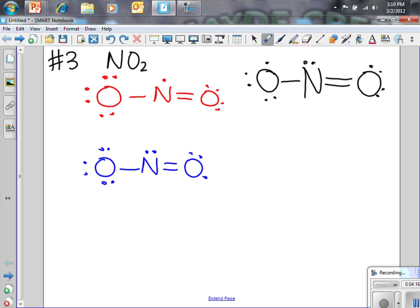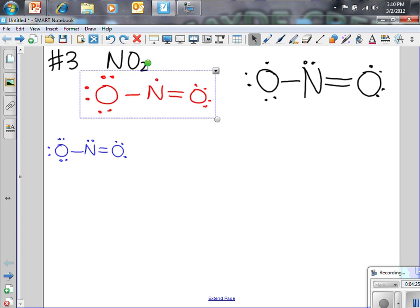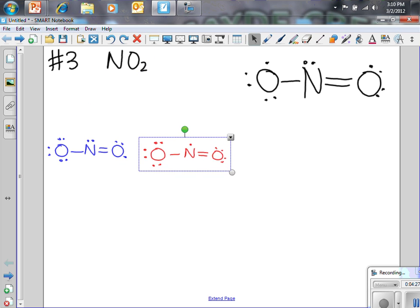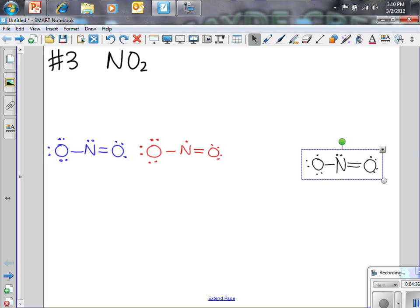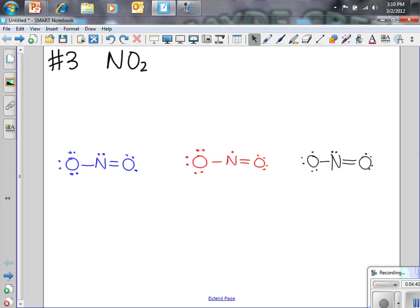Now these are not necessarily equally valid. Some of them may be better representations of this molecule and how it actually exists than others. But at this point, we have not discussed how to do that. And that's not something we tackle in pre-AP chemistry. It's something you do in AP chem with formal charges. So if you plan on going to AP chem, you'll get a little bit more information on that. But these would be your resonance structures.